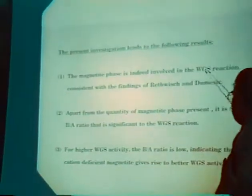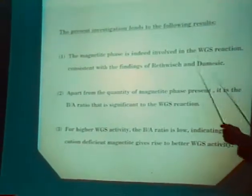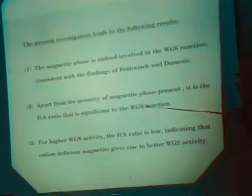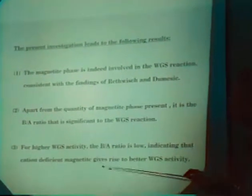Now, the overall results of this set of catalysts given here. Magnetite seems to be involved in the water-gas shift reaction. Actually it's known. Magnetite is known to be involved in water-gas shift reaction, and Wachs and Lomassi have demonstrated this earlier in the literature. And this seems to be consistent with this. Apart from the quantity of magnetite that is present, probably the B by A ratio is significant to the water-gas shift reaction, as shown by the previous correlation. For higher water-gas shift reaction activity, it looks like the B by A ratio is low, indicating that cation-deficient magnetite gives rise to better water-gas shift reaction.